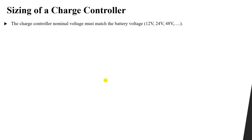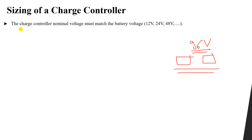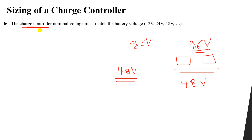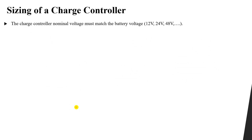Selecting the nominal voltage of the charge controller is really easy — just match the battery voltage with the charge controller voltage. For example, if a group of batteries operates at 96 volts, select a charge controller with a nominal voltage of 96 volts. If the batteries operate at 48 volts, select a charge controller with 48 volts. The charge controller voltage must equal the battery voltage.